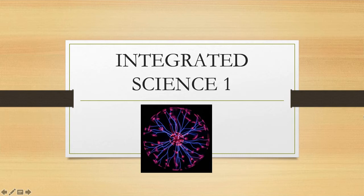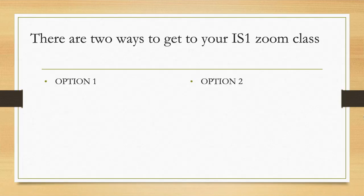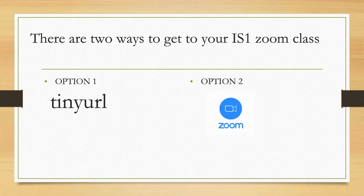Welcome to Integrated Science One. There are two ways to get to your IS-1 Zoom class. Option one, use a tiny URL provided by your teacher. Option two, go to your Canvas course and click on the Zoom link found on the home page.